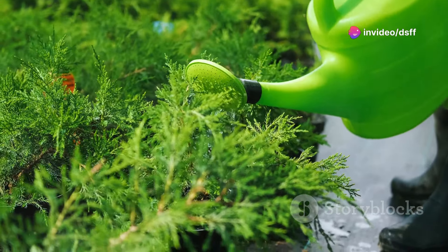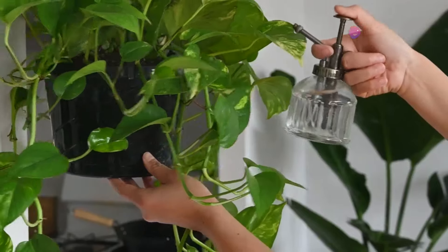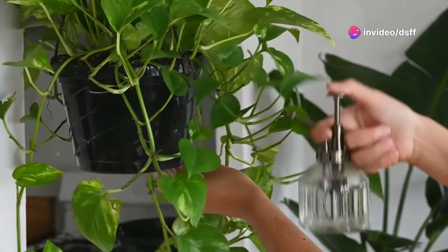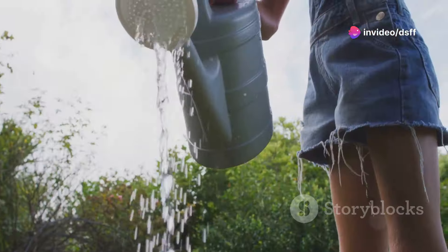Mistake number four, using the wrong type of watering can. A heavy stream can disturb the soil and damage delicate plants. Opt for a watering can with a gentle shower-like nozzle. This mimics natural rainfall and helps distribute water evenly without harming your plants.